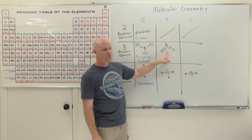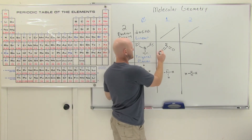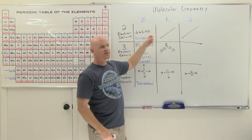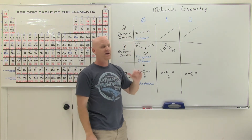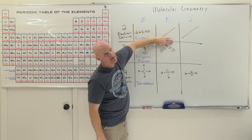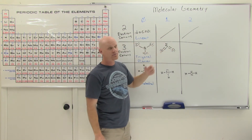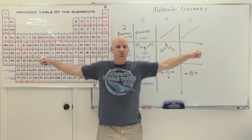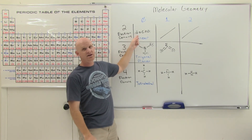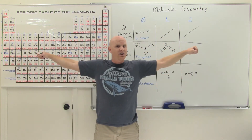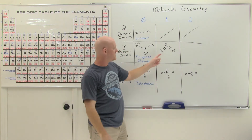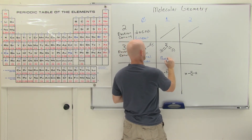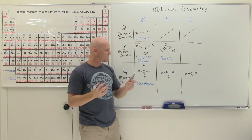If we look at SO2, the sulfur has three electron domains, so the electron domain geometry is trigonal planar. However, the lone pair is invisible. Looking at the three atoms, they're either in a straight line (linear) or they're not (bent). These two oxygen atoms are roughly 120 degrees apart — not 180 — so this shape is simply called bent.